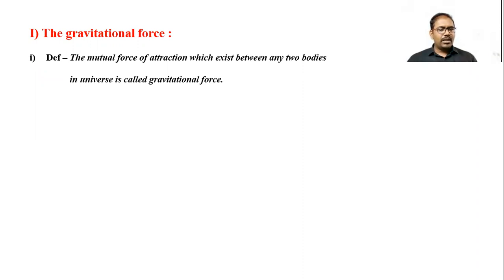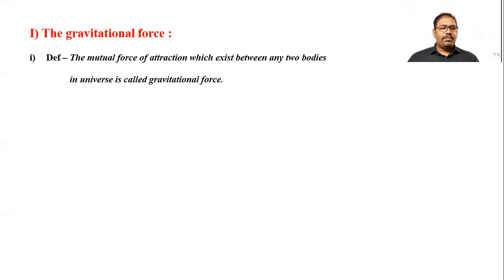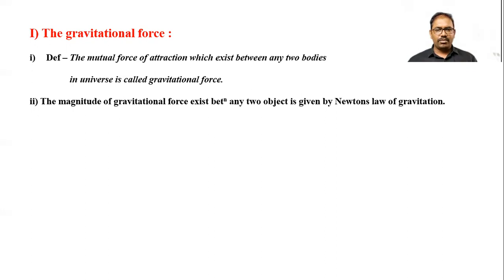Newton introduced the concept of gravity — you know the story of the apple and the tree. Now, if gravitational force exists between two objects, we can calculate it using Newton's Law of Gravitation, which you already learned in previous standards. The magnitude of gravitational force is given by: F = G·m1·m2 / r².